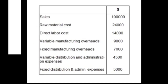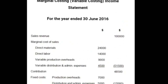Let's look at a solved example to better understand marginal and absorption costing. Sales revenue is $100,000; raw material $24,000; direct labor $14,000; variable manufacturing overheads $9,000; fixed manufacturing overheads $7,000; variable distribution and administration expenses $4,500; and fixed distribution expenses $5,000.